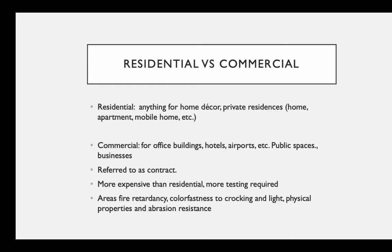The two main categories are residential and commercial. Residential is anything for the home — private residences, apartments, studios, mobile homes. When something is listed for residential purposes, anyone can pretty much buy it. Commercial is for businesses — office buildings, hotels, airports, public spaces. For commercial you usually need a corporate account or wholesale resale number; they don't sell to the public. Commercial is also referred to as 'contract.'